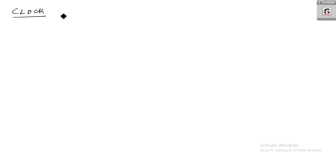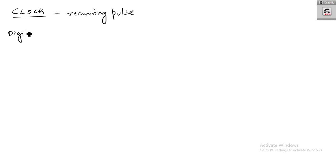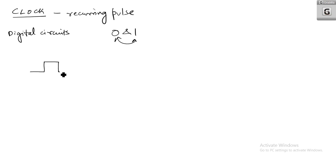A clock is basically a recurring pulse in digital circuits. In digital circuits we play with only values 0 and 1. A clock means it will toggle between 0 and 1 for a particular interval of time. If you are drawing a clock signal it will be like this: 0, 1, after the same time you go to 0, 1, 0, 1, like that.